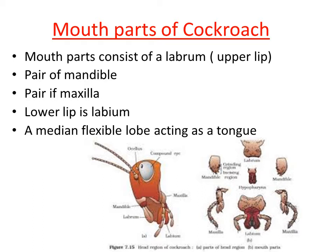To summarize the mouth parts of cockroach: labrum is the upper lip; next to it is a pair structure called mandible; next to the mandible is another pair structure called maxilla; the lower lip is called labium; and a small flexible median lobe acting as a tongue is named as hypopharynx. Now let us study about the anatomy, starting with the digestive system of cockroach.